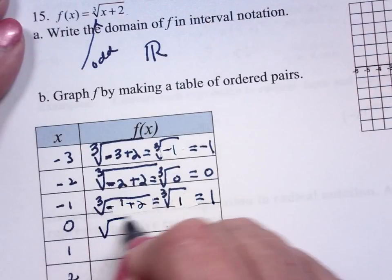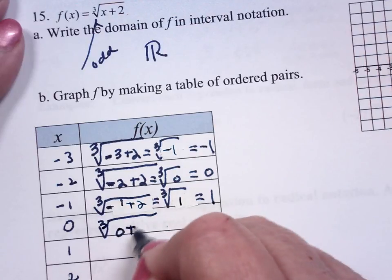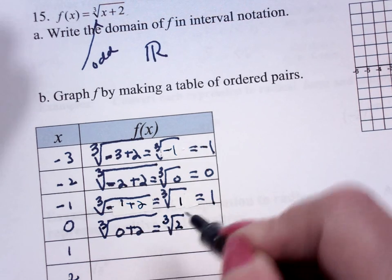This is the cube root of 0 plus 2, which is the cube root of 2. Haven't a clue.